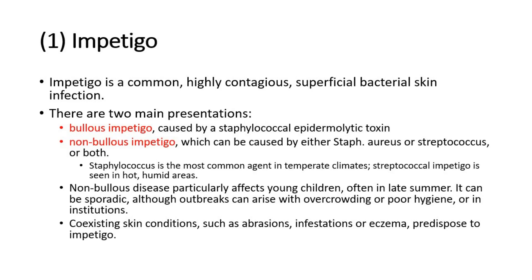First, for impetigo. Impetigo is a common, highly contagious, superficial bacterial skin infection. There are two main presentations: bullous impetigo, caused by a staphylococcal epidermolytic toxin, and non-bullous impetigo, which can be caused by either staph aureus or streptococcus, or both. Staphylococcus is the most common agent in temperate climates, while streptococcal impetigo is seen in hot, humid areas.